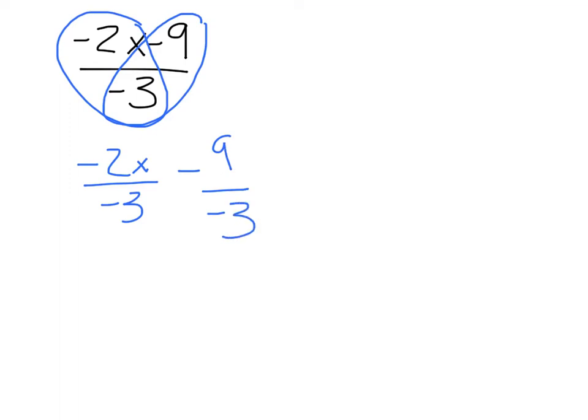Since a negative divided by a negative is a positive, my second term here will actually turn into a positive 9 over 3. So my final answer is going to be 2x over 3, or 2 thirds x, because again, I have a negative divided by a negative, combined with 9 over 3, which is just 3.